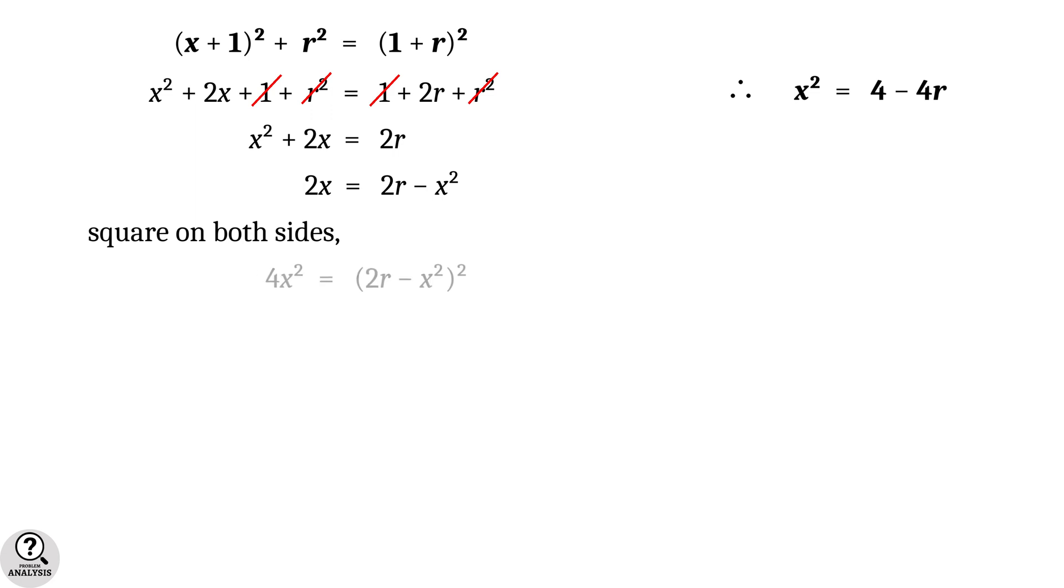That gives 4X square is equal to 2R minus X square whole square. But we know that X square is equal to 4 minus 4R. Substitute that in our equation. So, 4 into 4 minus 4R is equal to 2R minus 4 minus 4R the whole square. The right hand side simplifies to 4 into 3R minus 2 whole square.